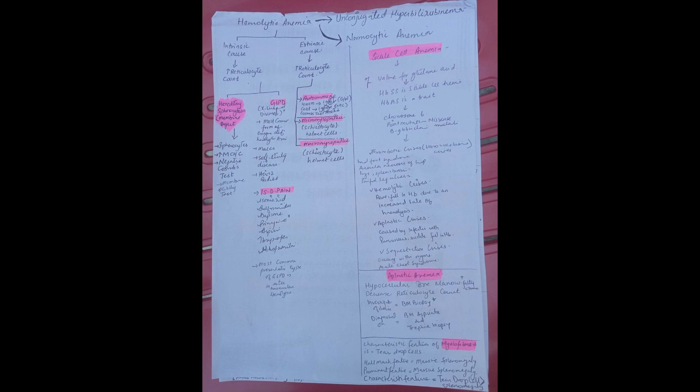Now let's move on to the other type of anemia. There is sickle cell anemia. In sickle cell anemia, valine is substituted for glutamic acid.